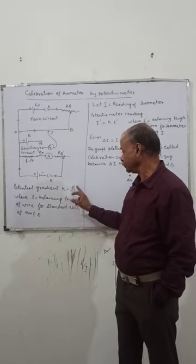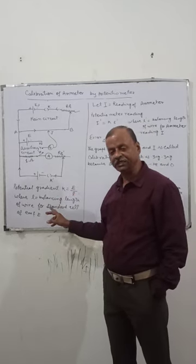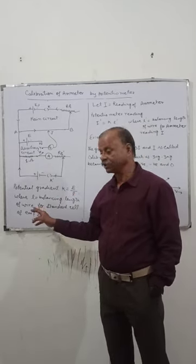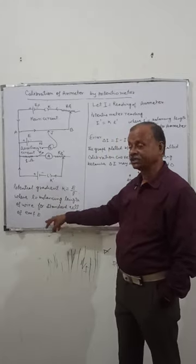Now, potential gradient E = K = E/L where E is the EMF. L is the balancing length for the corresponding EMF of the cell. This is the standard cell.